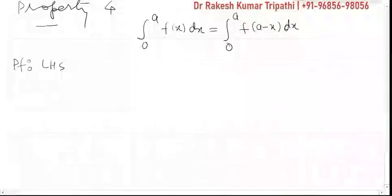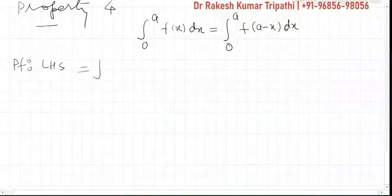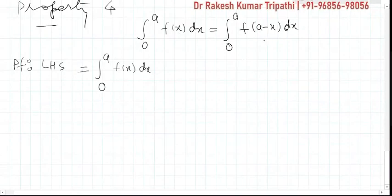So from left hand side we start 0 to a f(x) dx. Here we can experience that x should be replaced by a minus x, but directly we cannot write like x is equal to a plus a minus x, so we use another variable t for this.